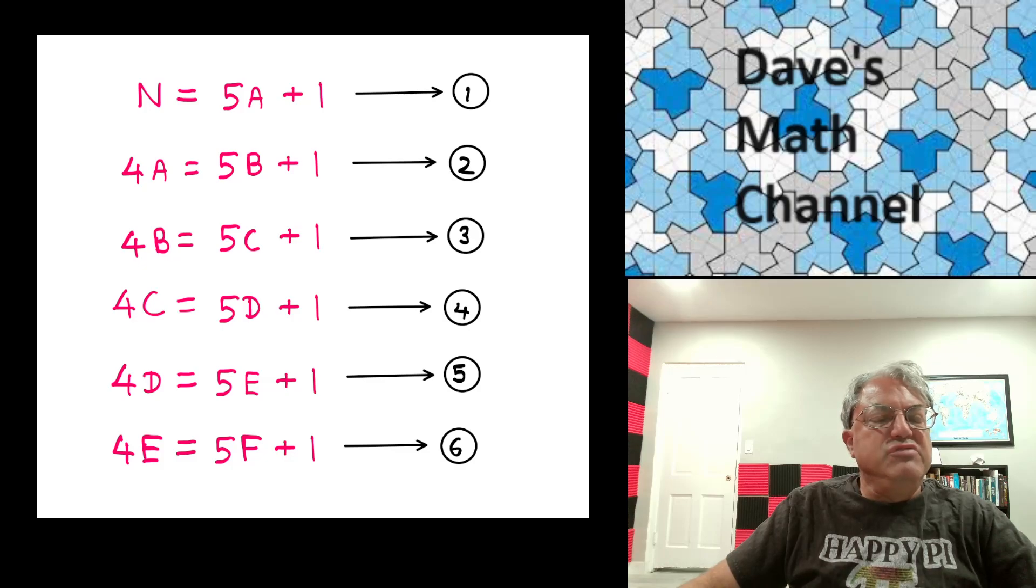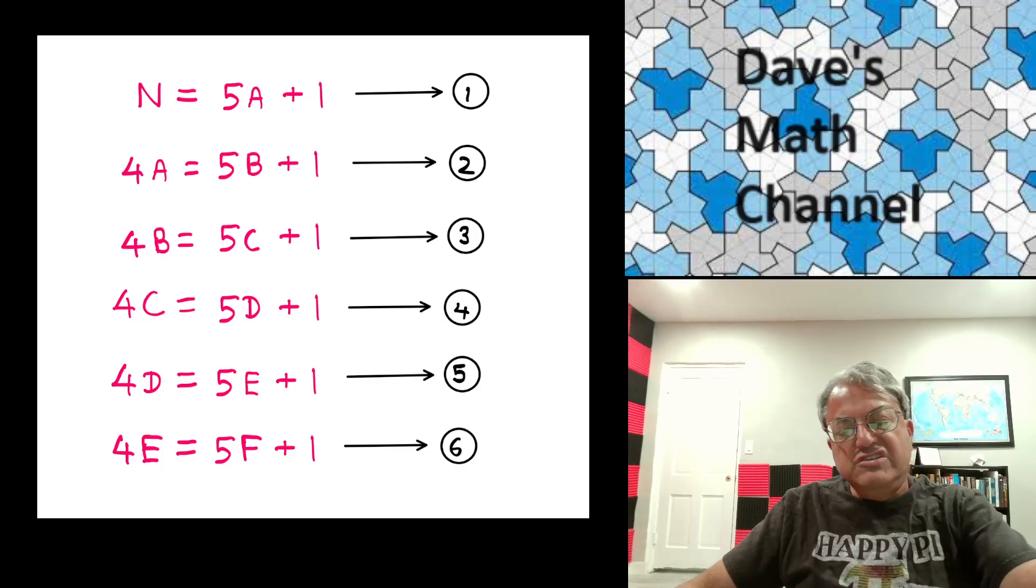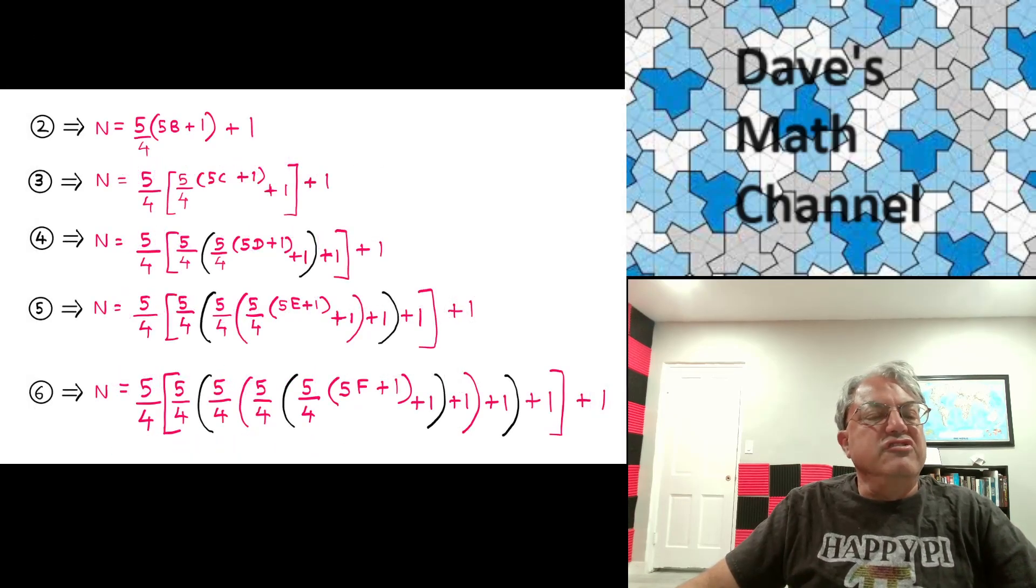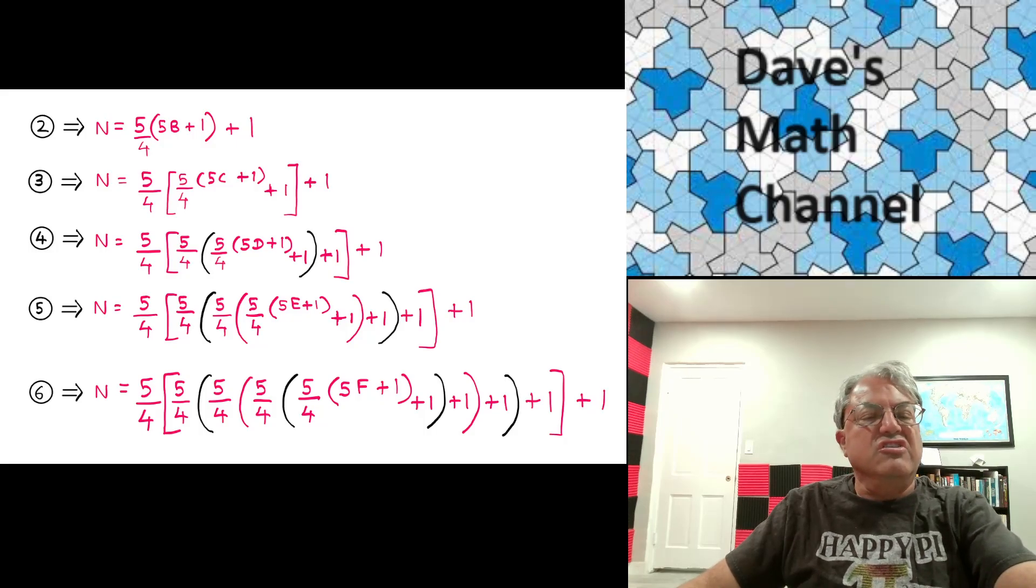So now we can do backtracking here, which is done here. So you can write an expression for N in terms of F. I mean, we really don't care about A, B, C, D, and E. We can substitute, back substitute form, which is what's done here. You get a very ugly expression at the end.